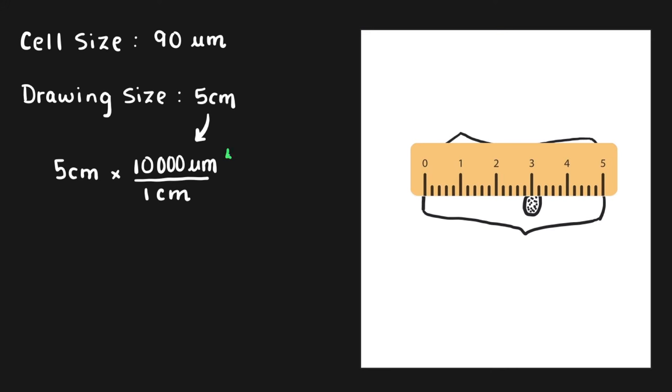We know this number because there are 10 millimeters per centimeter and 1,000 micrometers per millimeter. So we multiply those two conversion factors together, we get 10,000. We see that our centimeters are going to cancel. So we have five times 10,000, that equals 50,000 micrometers. That's how big our drawing is.